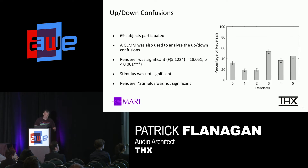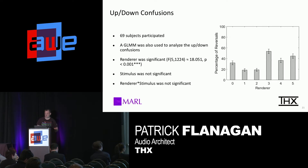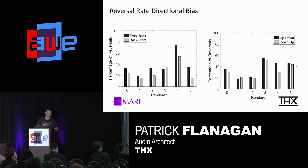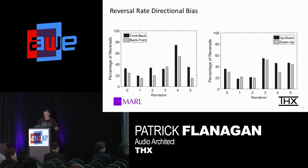Up-down confusions: again 69 participants, similar analytical method. Renderer was significant; stimulus was not, and renderer-times-stimulus was not. Renderer three performed worst in this test with over 50% up-down confusions. Looking at reversal rate directional bias, reversal rates were broken down to understand the paradigm between front-to-back and back-to-front. Renderers one and two performed quite well, while renderer four performed badly in both front-to-back and back-to-front directions.